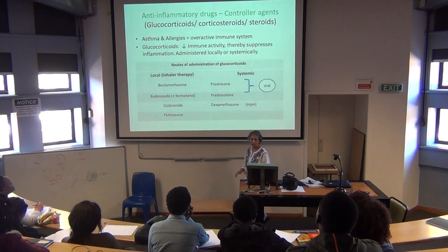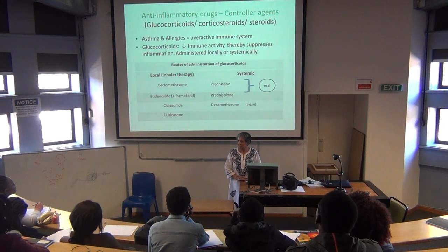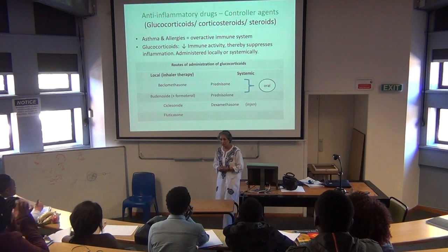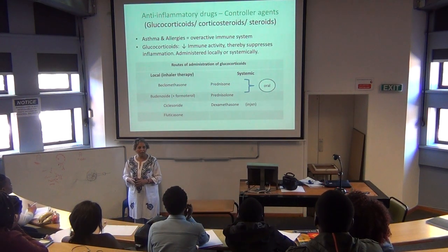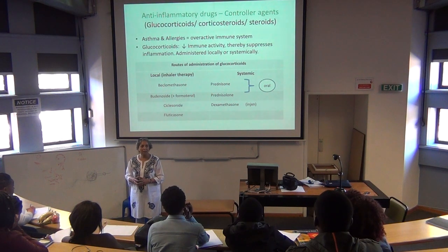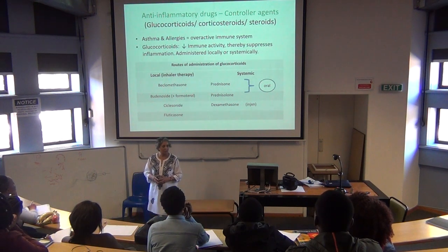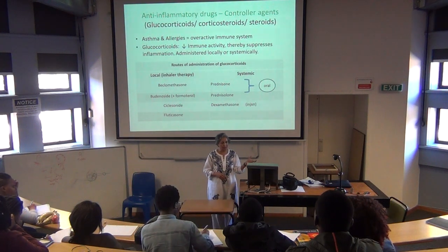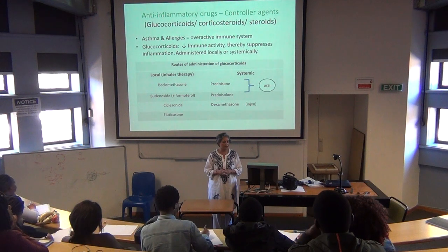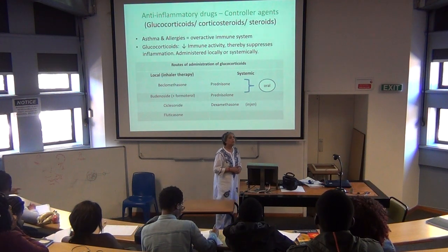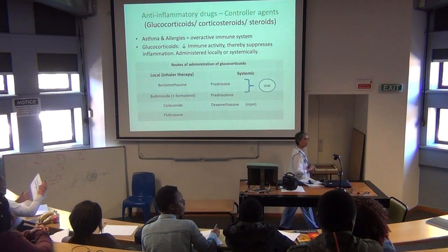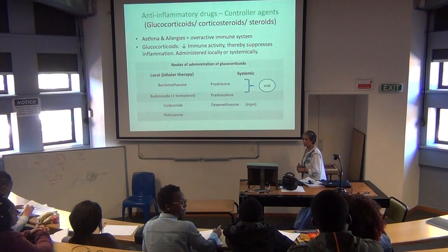Via the inhaler route, we have beclomethasone, which is a corticosteroid, then budesonide and formoterol. Formoterol is a long-acting bronchodilator, a beta-2 agonist — so that's a combination preparation. Another example is ciclesonide and fluticasone, given via the inhaler. Then the anti-inflammatory given by the systemic route includes prednisone or prednisolone, and it's also given by injection with the agent dexamethasone.